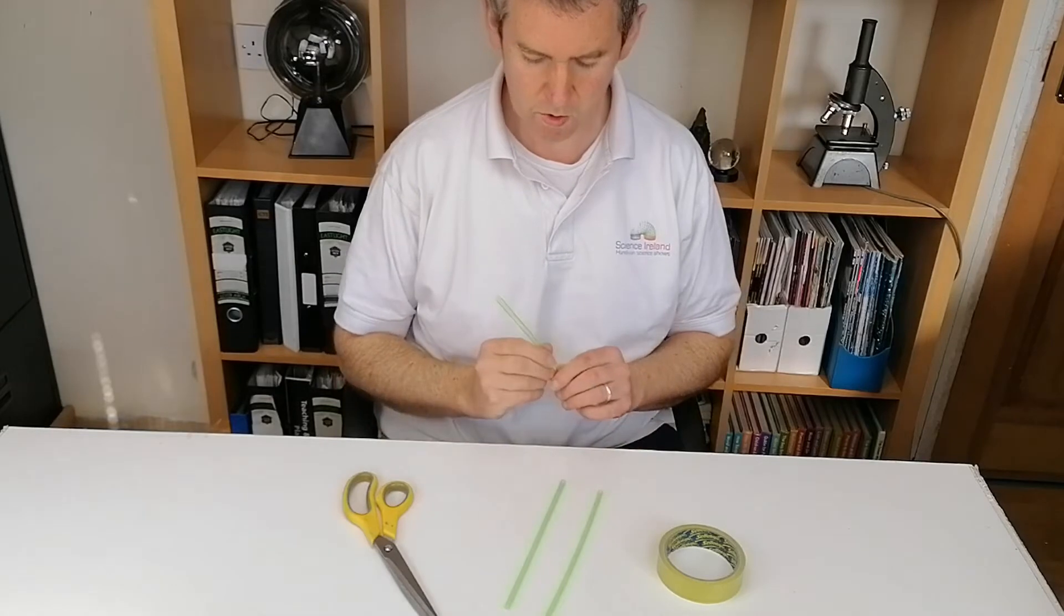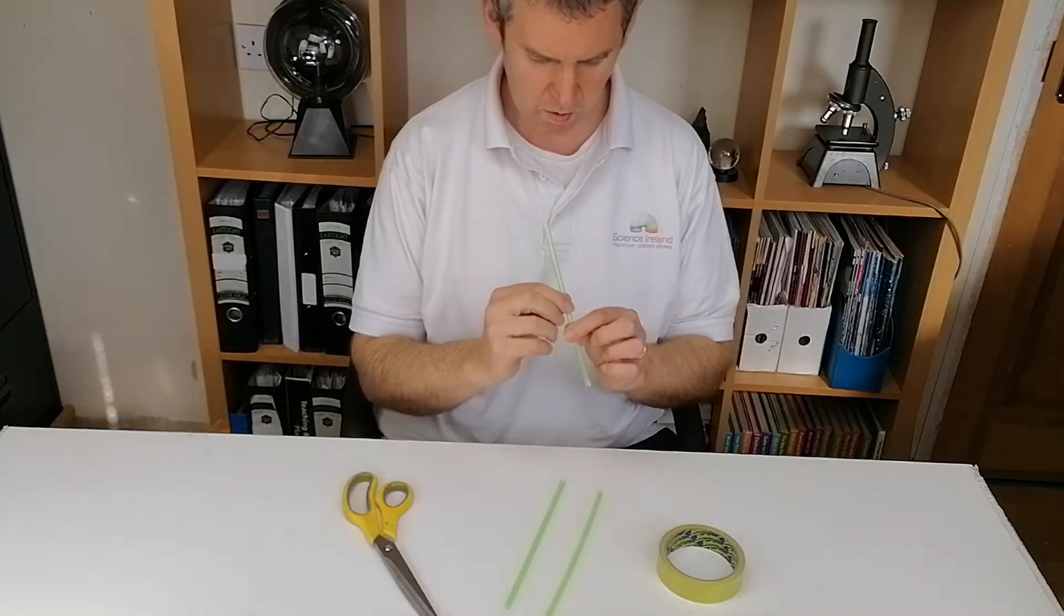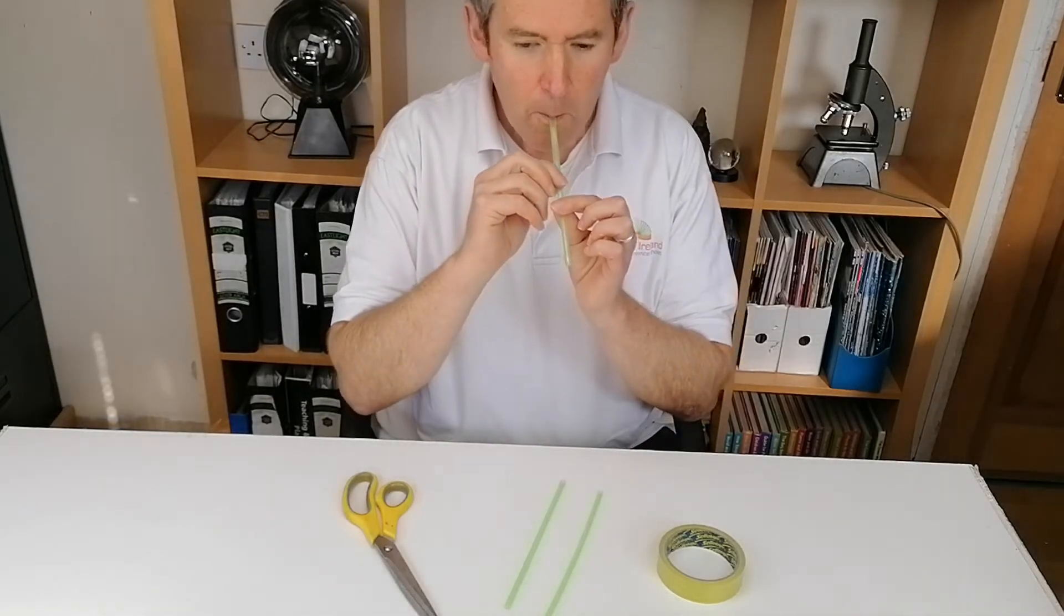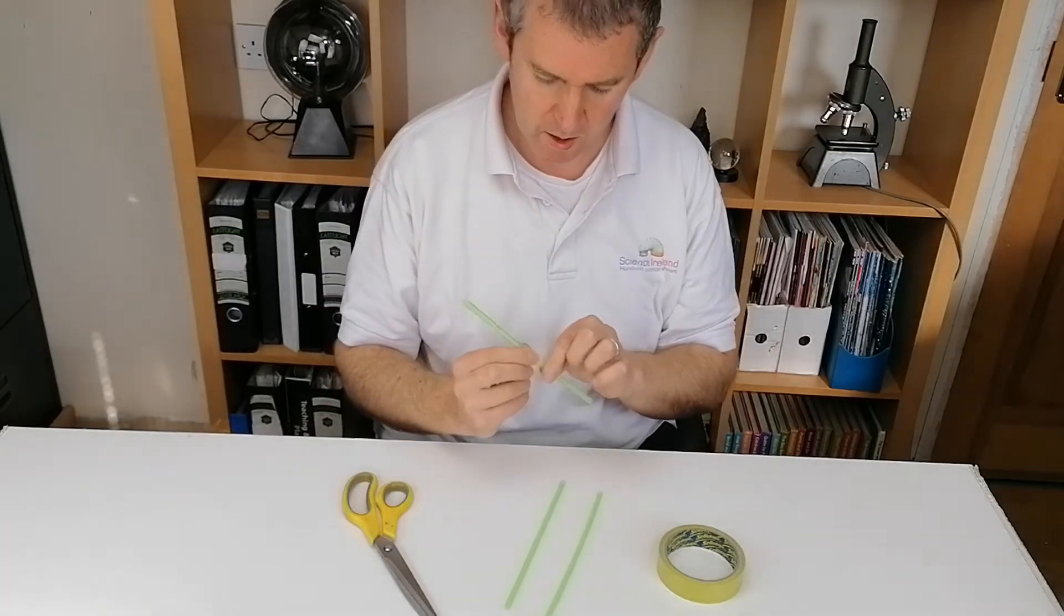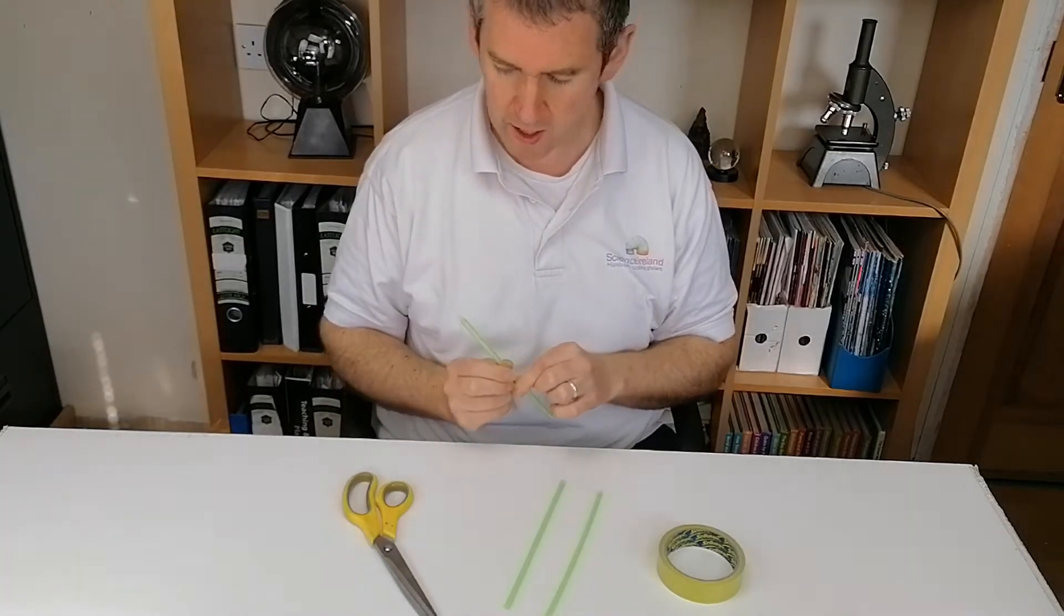In this activity we want to make a straw kazoo. Just to demonstrate what a straw kazoo is like, we're just going to blow and you can see it makes quite a distinct noise.